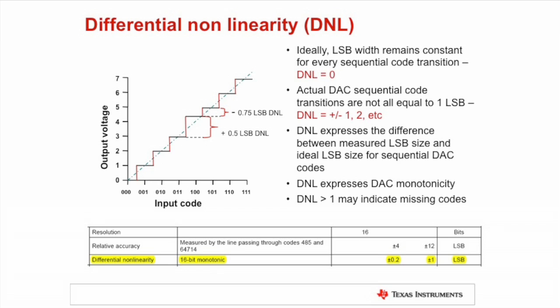DNL is directly applicable to monotonicity and missing codes. If DNL at any given transition is less than negative 1, the DAC is referred to as non-monotonic, meaning there is a chance that increasing the DAC code will actually decrease the DAC output.